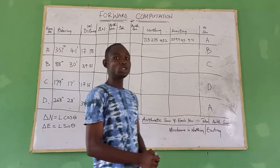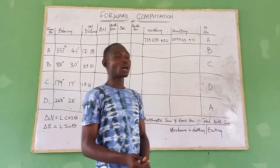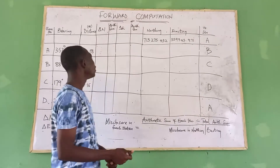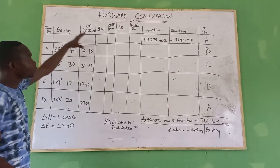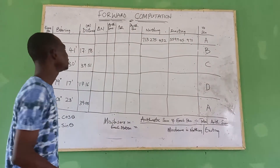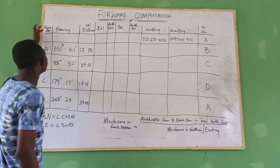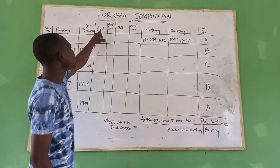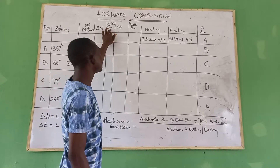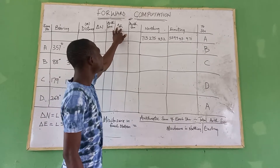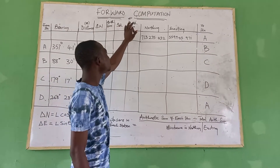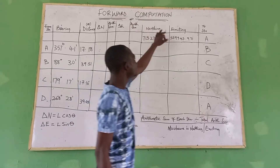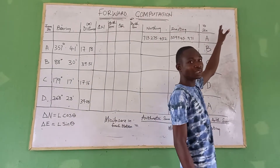Today I will be showing you how to calculate forward computation. On the board we have a table showing how to calculate forward computation. Here we have: from station, bearing, distance, delta northing, arithmetic zone for delta northing, delta easting, arithmetic zone for delta easting, northing, easting, then back to your station.